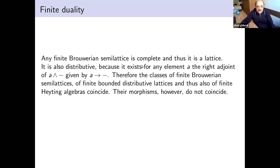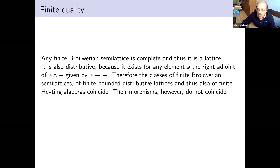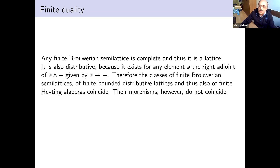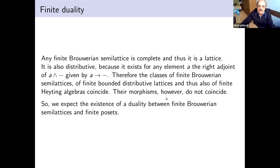From the point of view of objects, the category of finite Brouwerian semilattices is the same as the category of finite Heyting algebras and also distributive lattices, but the morphisms are different, and it is important to realize this. We expect a duality between finite Brouwerian semilattices and finite posets.